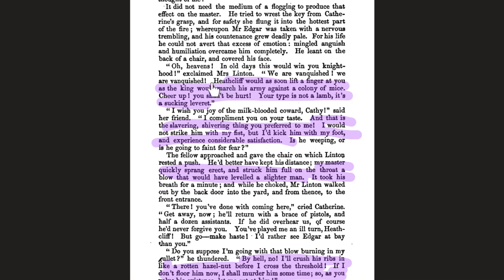Heathcliff smashes the lock with the fireplace poker and leaves. Catherine throws herself on the sofa: 'I'm nearly distracted — a thousand smiths' hammers are beating in my head!' She tells Nellie to tell Isabella to shun her, and to tell Edgar she's in danger of being seriously ill. Nellie notes privately: 'I wish it may prove true' — Catherine is going to fake illness just to get Edgar's sympathy. 'I want to frighten him.'